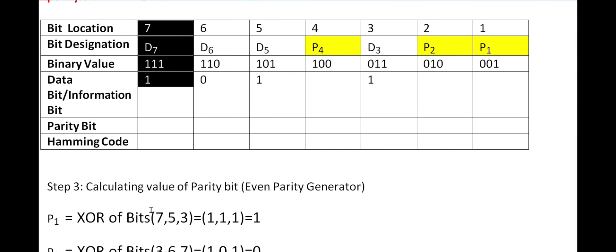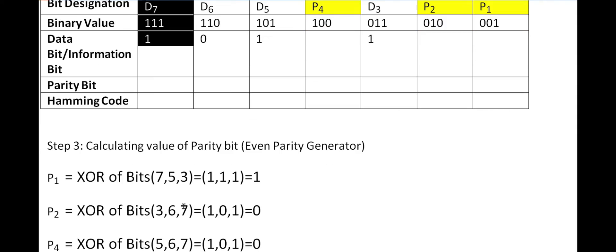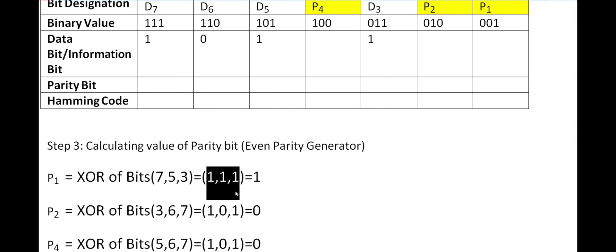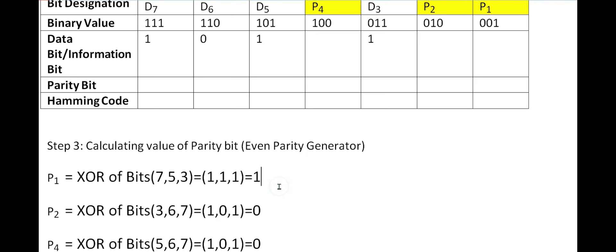XOR operation acts as an even parity generator. We have three 1's — an odd number — so the XOR generates 1 to make the total count even. Alternatively, XOR the first two bits and then XOR the result with the third. Either way, P1 = 1.